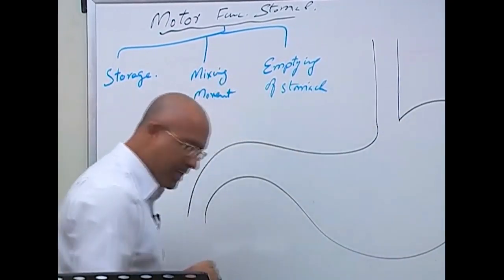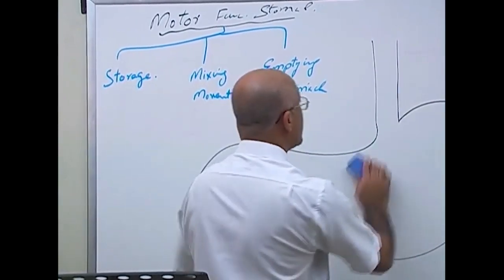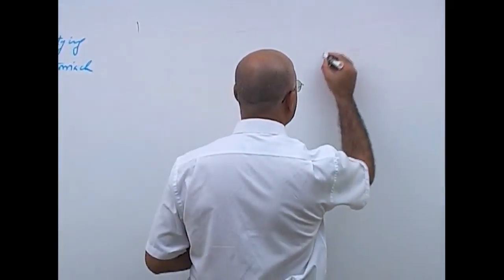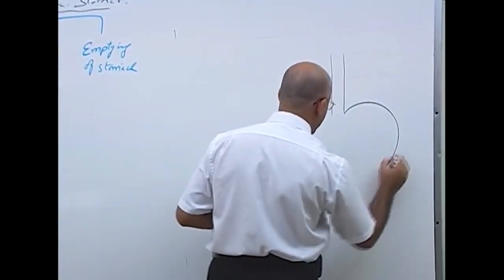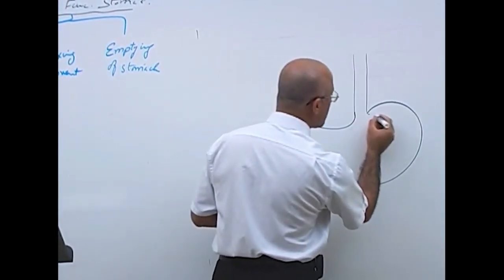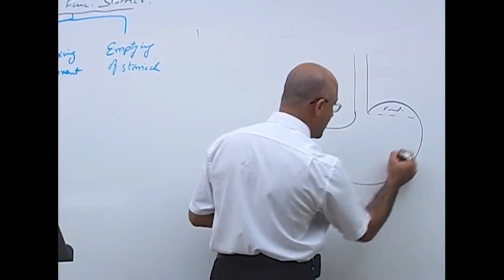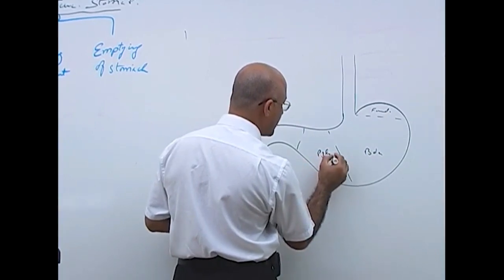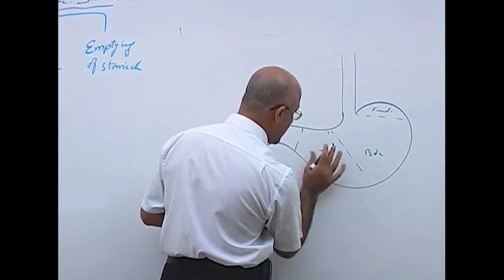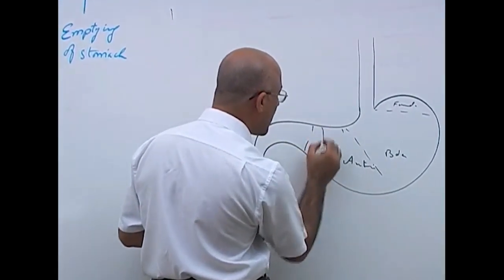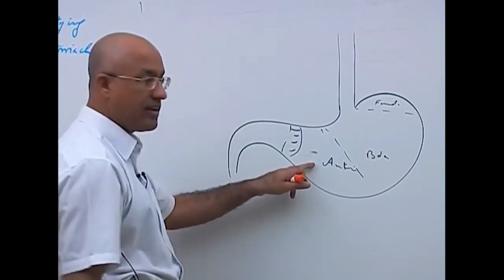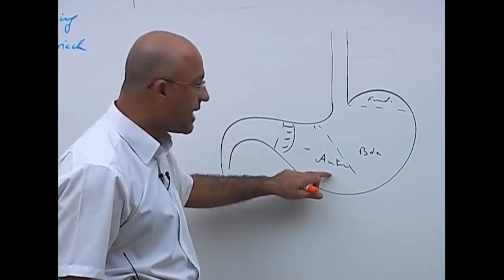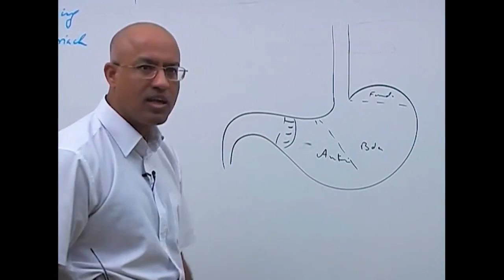Let me draw the anatomy of the stomach. The stomach is divided into three anatomical regions. The supermost is the fundus, then there is the body, and then there is the antrum. The last part of the antrum, which is the exit from the stomach, is called the pylorus.